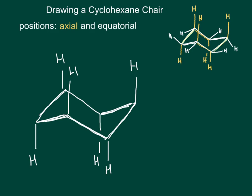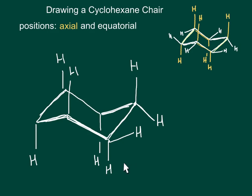Now we go to draw the equatorial hydrogens. They're going to be pointing slightly up or slightly down, and they're going to be parallel to some other bond already formed. Starting at the carbon on the far right, we have an axial that's straight up, and if we draw about 109.5 degrees, you can see that this bond is parallel to this bond. What you want to avoid is drawing the hydrogen straight across at a 90-degree angle. Keep in mind that every carbon is going to have one hydrogen in the up position and one in the down position. So if the axial is straight up, the equatorial is going to be pointing slightly down; if the axial is straight down, the equatorial is going to be slightly up. We can come to the other end and fill in those two as well.